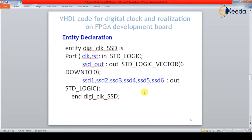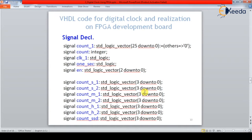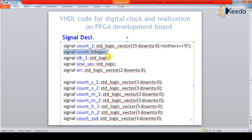This is all about our entity declaration. Coming to the architecture part, between the architecture and begin we can declare internal signals. The digital clock requires a one-hertz frequency, so we need some internal signals. For that we need to declare one counter with an integer value because we need to design a very specific one-hertz frequency.